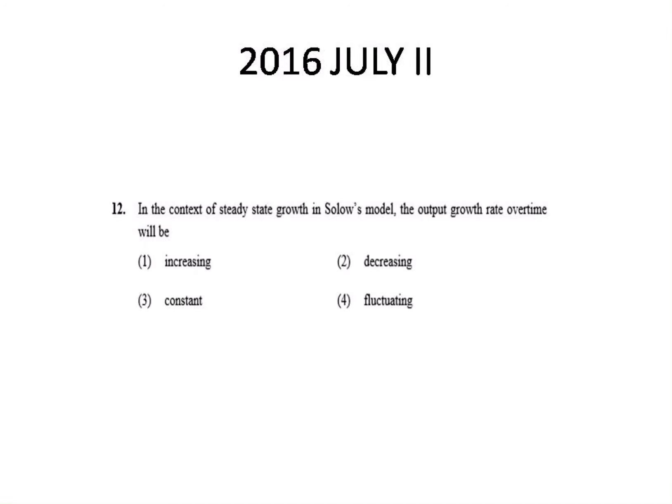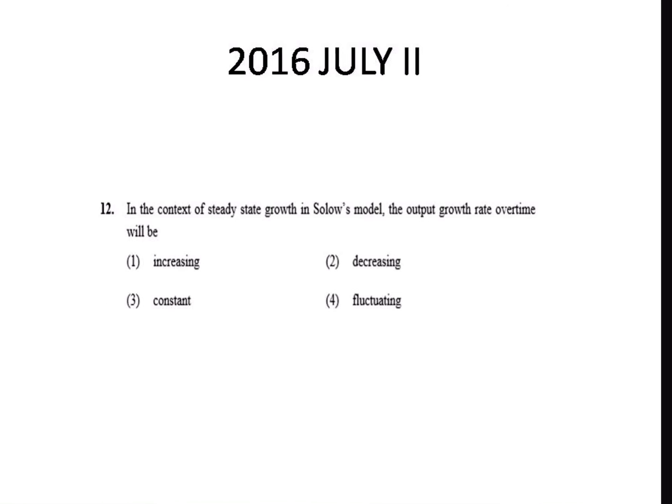Next question from 2016 July Paper 2: In the context of steady-state growth in the Solow model, the output growth rate over time will be — constant, increase, decrease, or fluctuate? We have already seen that the growth rate will be constant.